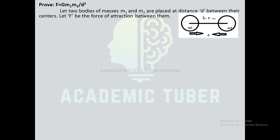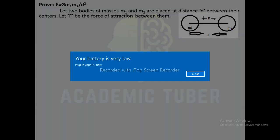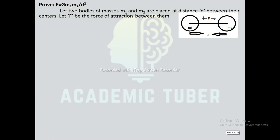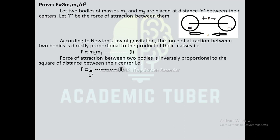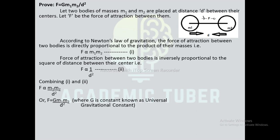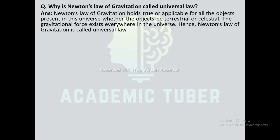Consider two bodies of masses m₁ and m₂ kept at distance d between their centers; let F be the force of attraction between them. According to Newton's Law of Gravitation, force is directly proportional to the product of their masses — if mass increases, force increases — and inversely proportional to the square of distance between their centers — if distance increases, force decreases. Combining both, F ∝ m₁m₂/d², or F = Gm₁m₂/d², where G is the universal gravitational constant. Hence proved.